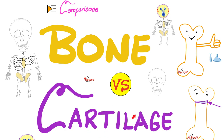Bone is vascular. Cartilage is avascular. Bones have osteocytes. Cartilage cells are the chondrocytes. How do we build up bone? Osteoblasts. How do we build up cartilage? Chondroblasts. The matrix of the bone is calcified. The matrix of the cartilage is not calcified. There is a type of bone growth where the cartilages sacrifice themselves — they die — and upon the debris and the corpses of these cartilages, we lay down new bone foundation. What's the name of this process?